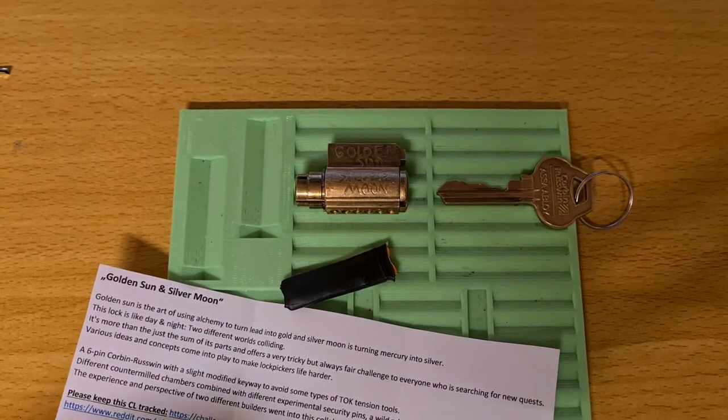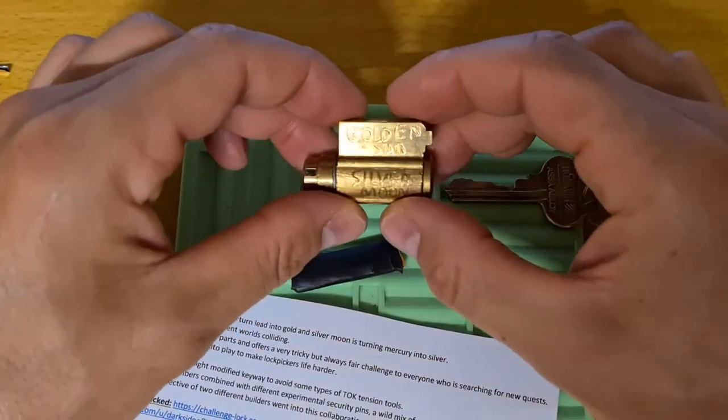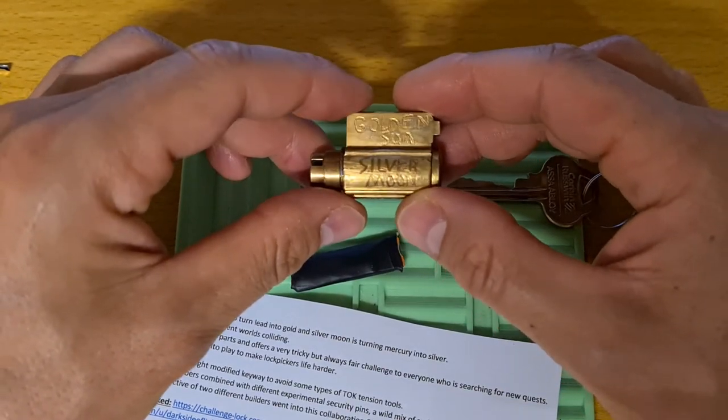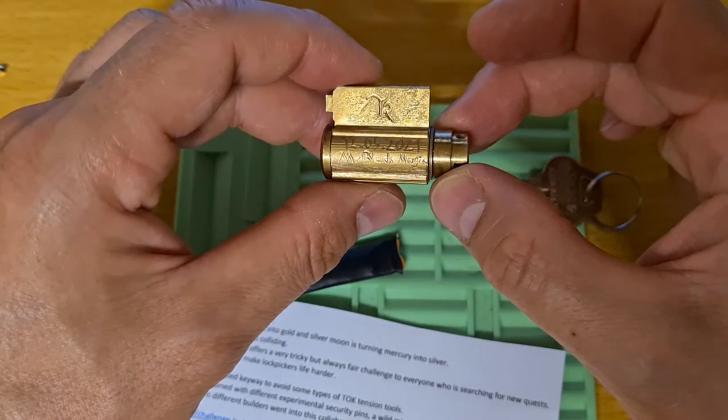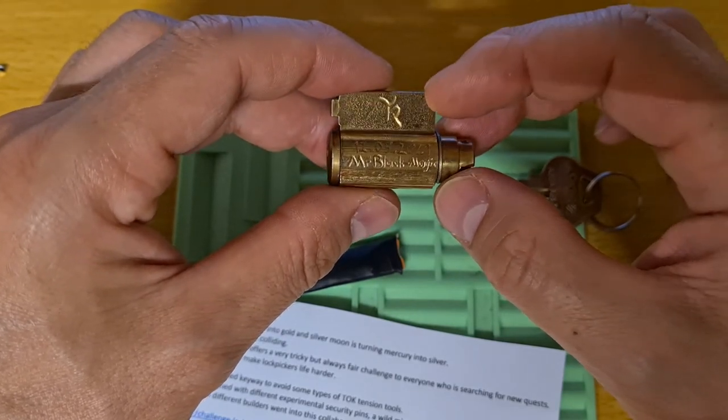Hello, this is Moon and this thing in front of me is supposed to be a challenge lock. It's called Golden Sun and Silver Moon and it is done by Mr. Black Magic in cooperation with The Rune Picker.